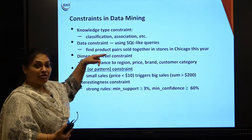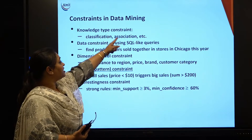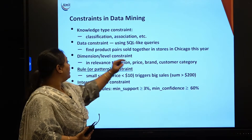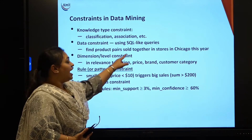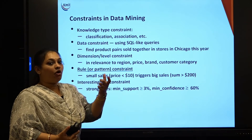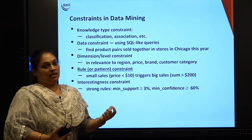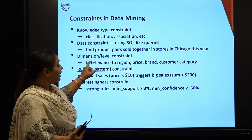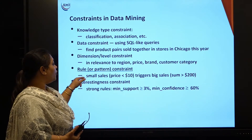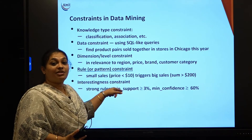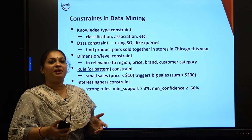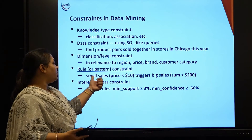This is purely based upon what we have already learnt. The knowledge type constraint covers classification and association. Data constraints are your SQL queries. Dimensional level constraints relate to levels we discussed previously — like the threshold between normal milk and skimmed milk, or attributes like region, price, brand, and customer category. Rule constraints use SQL rules — comparisons such as greater than, equal to, comparing ages, salary, or maximum values.